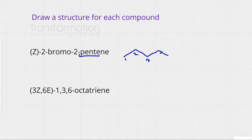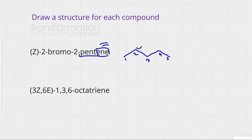Numbering in organic chemistry is very useful. The '2' in '-2-ene' means I have a double bond starting from carbon number two, so it must be between carbons two and three. I also have bromine on carbon number two from '2-bromo'.